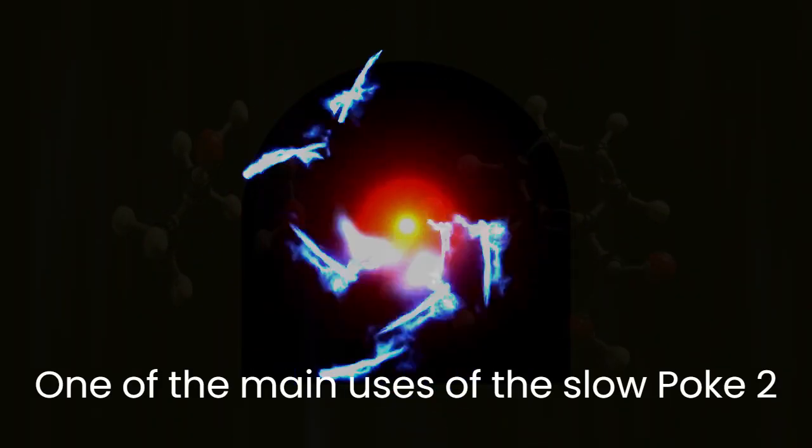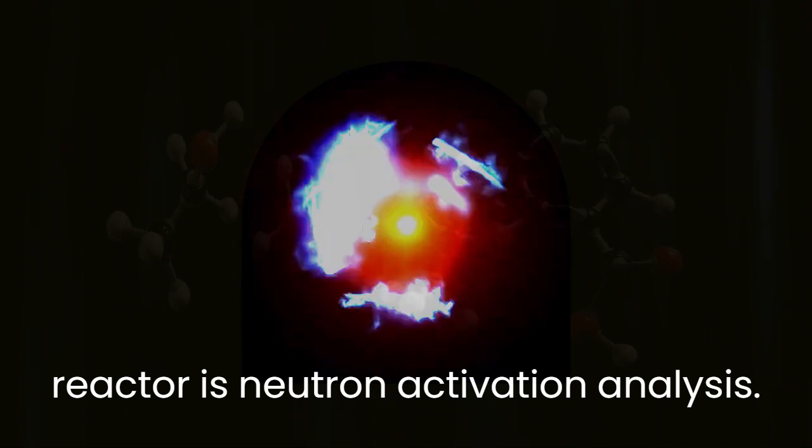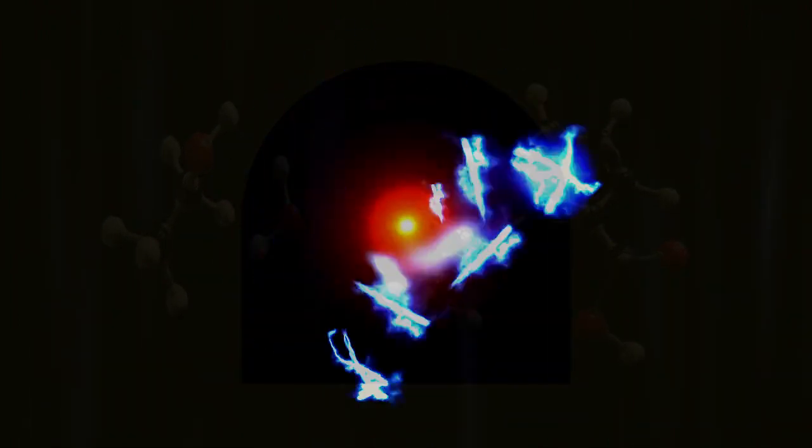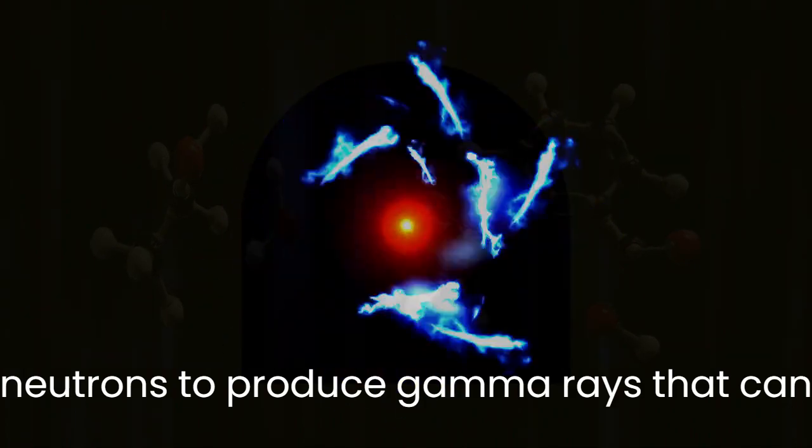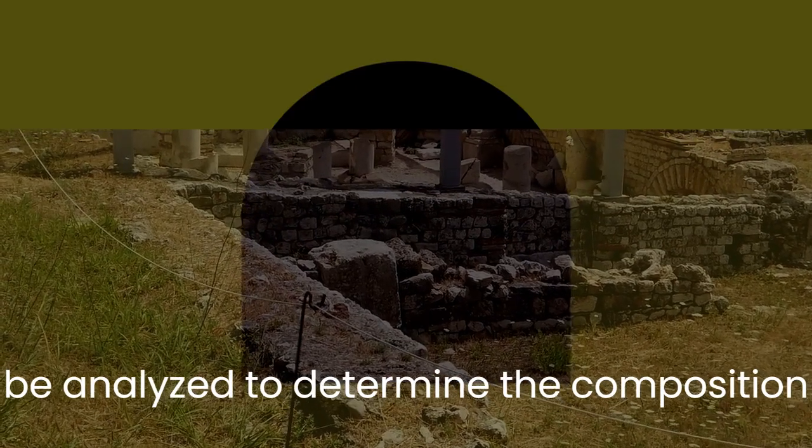One of the main uses of the Slowpoke 2 reactor is neutron activation analysis, which involves bombarding samples with neutrons to produce gamma rays that can be analyzed to determine the composition of the sample.